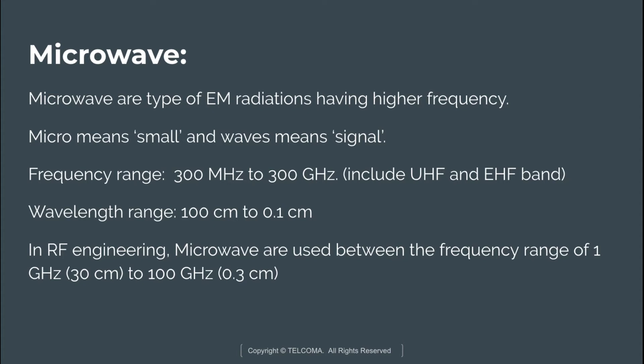Sometimes some attenuation occurs in these signals due to trees and other obstacles. Due to the propagation characteristics of these frequencies, a large amount of information can be carried over remote communication sites. It does not require any cables because it works on the concept of line-of-sight, which is a clear path without any obstacles between the transmission and reception points.